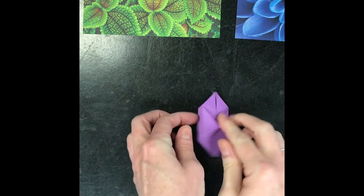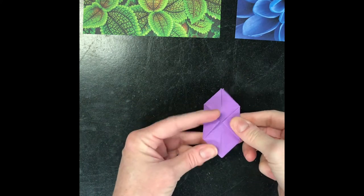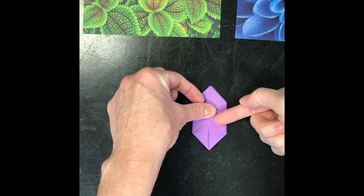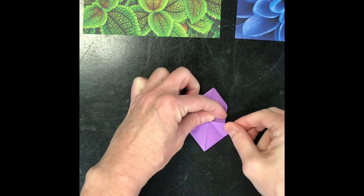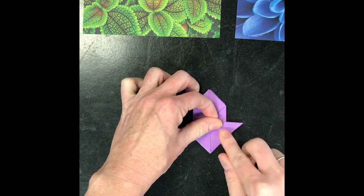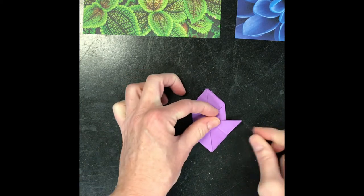Those corners will meet up in the middle. So now you want to take that bottom corner, and I'm going to fold it along the edge there so it kind of pokes out to the side, flat.